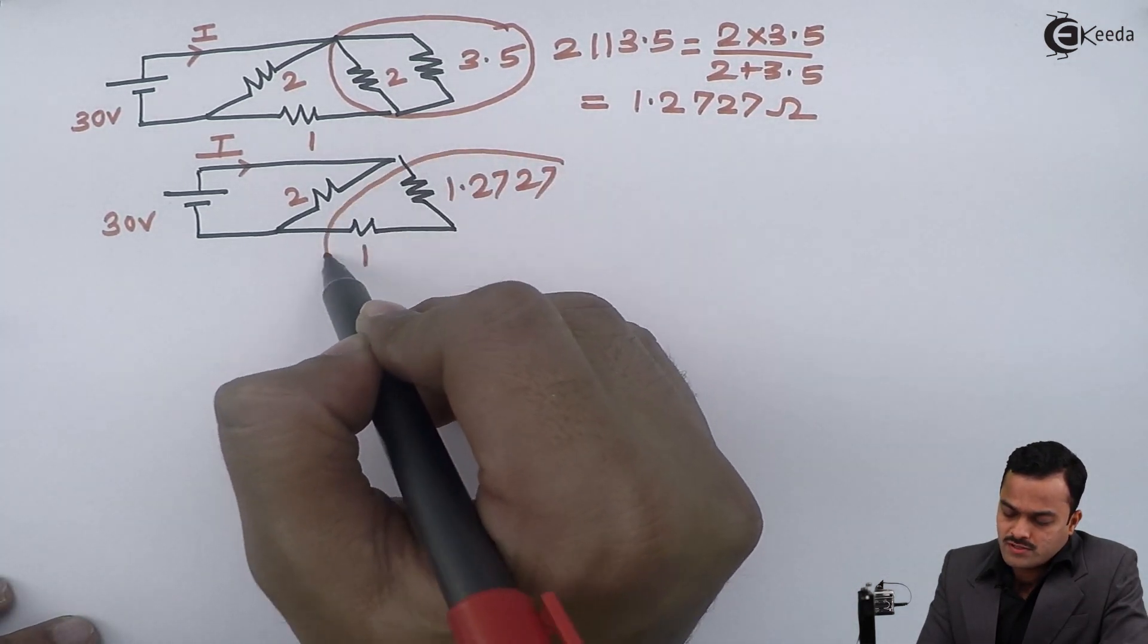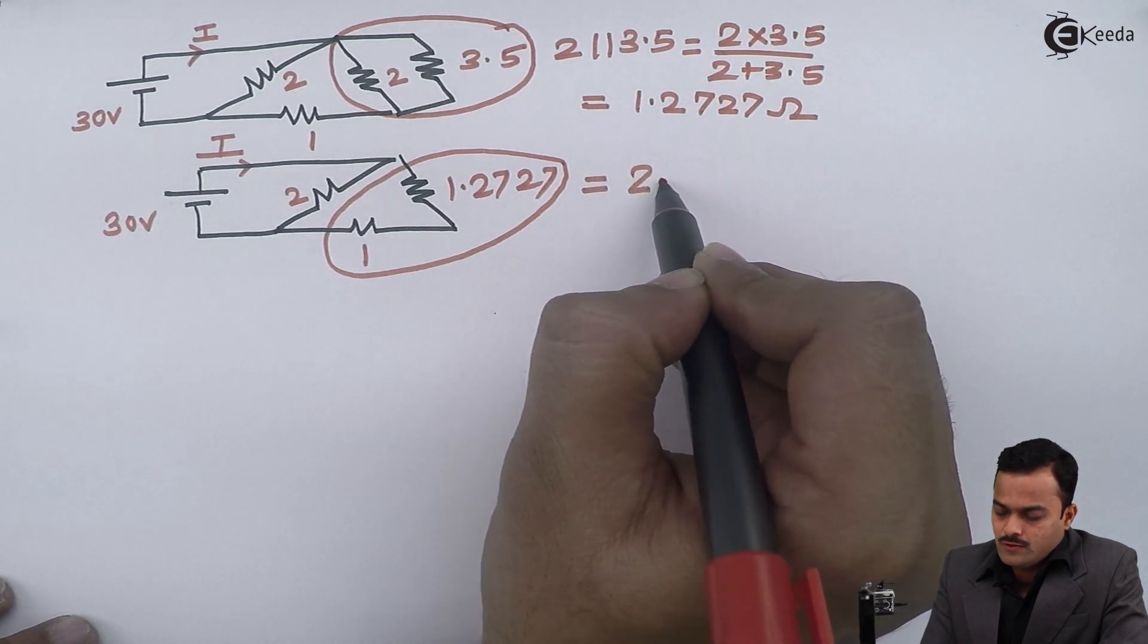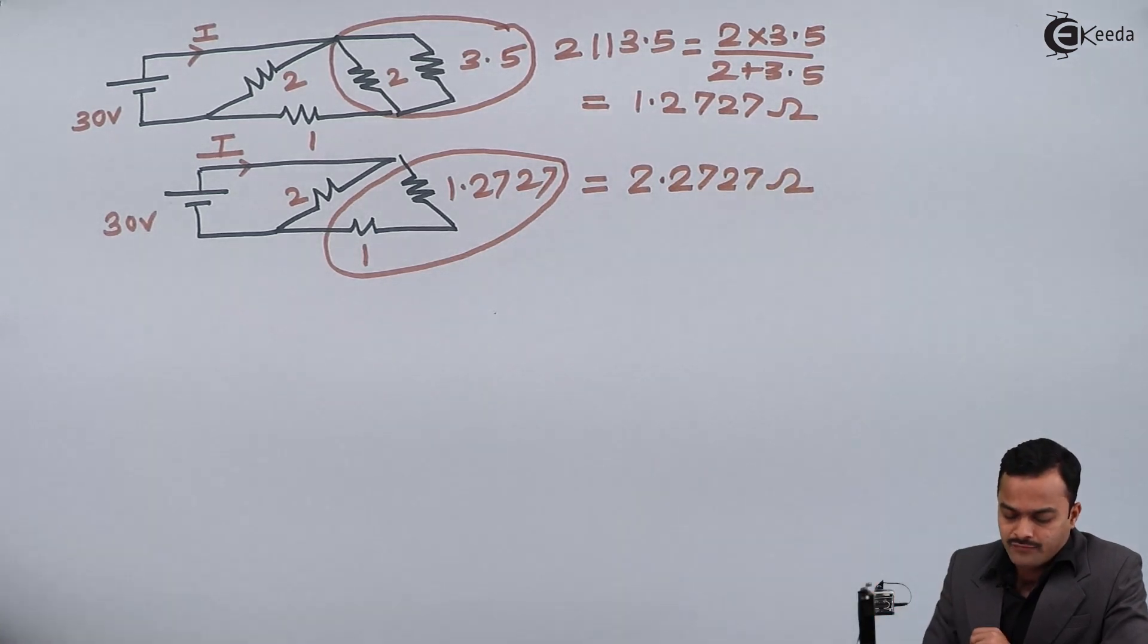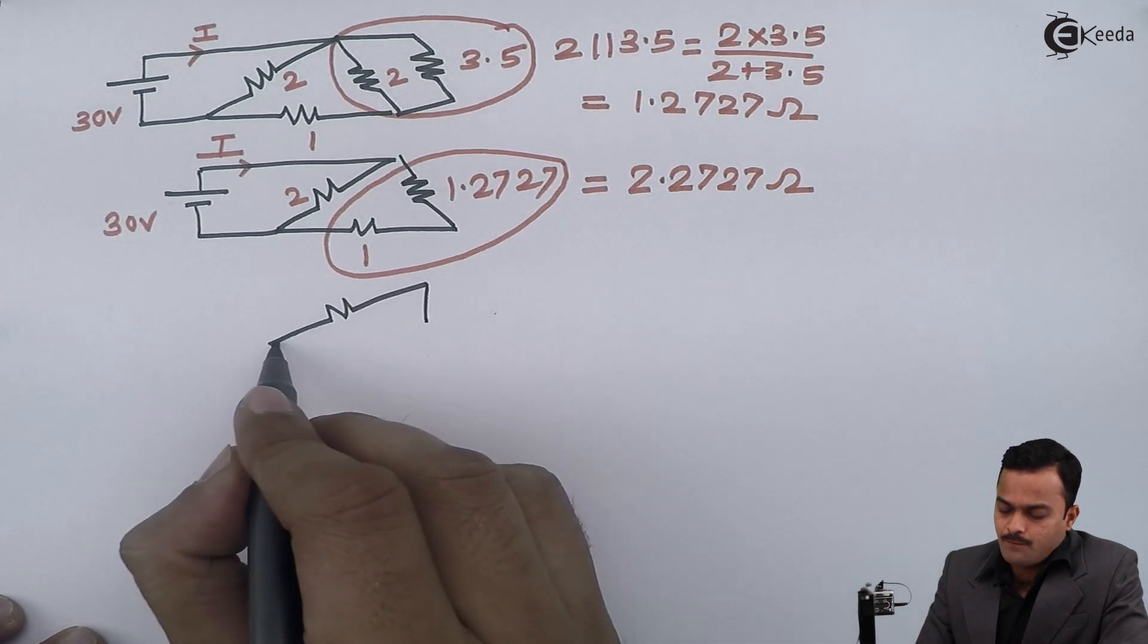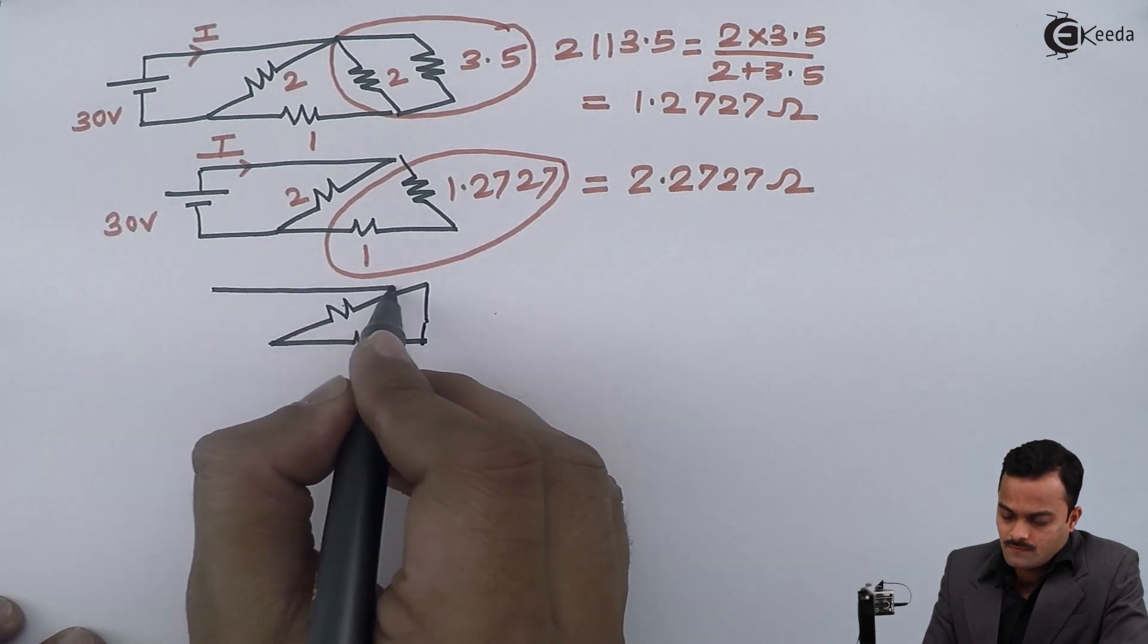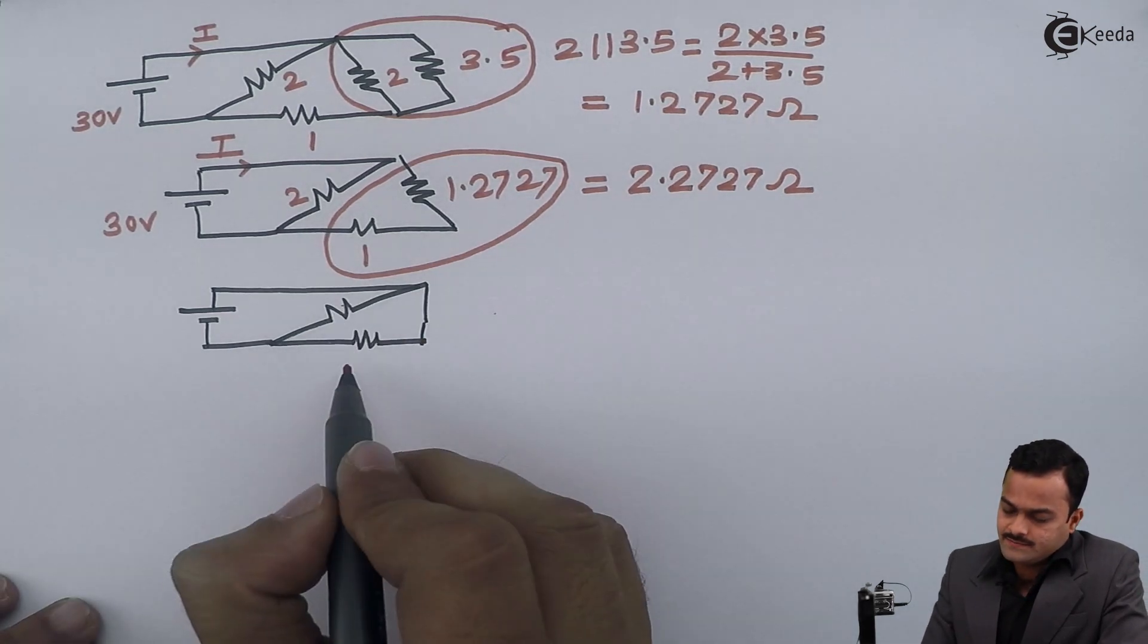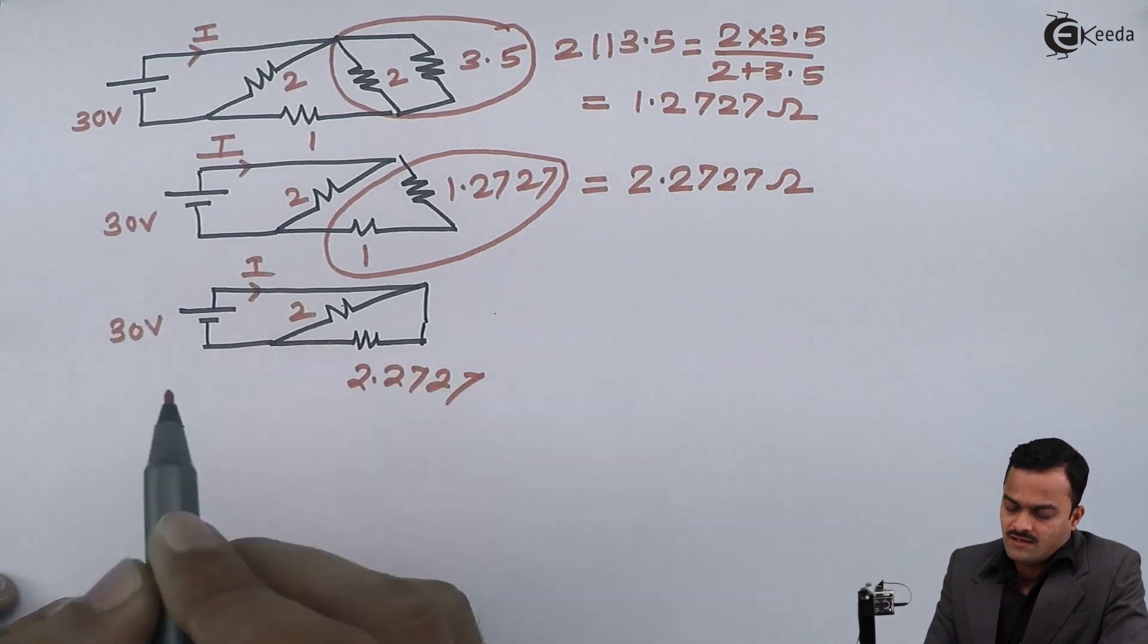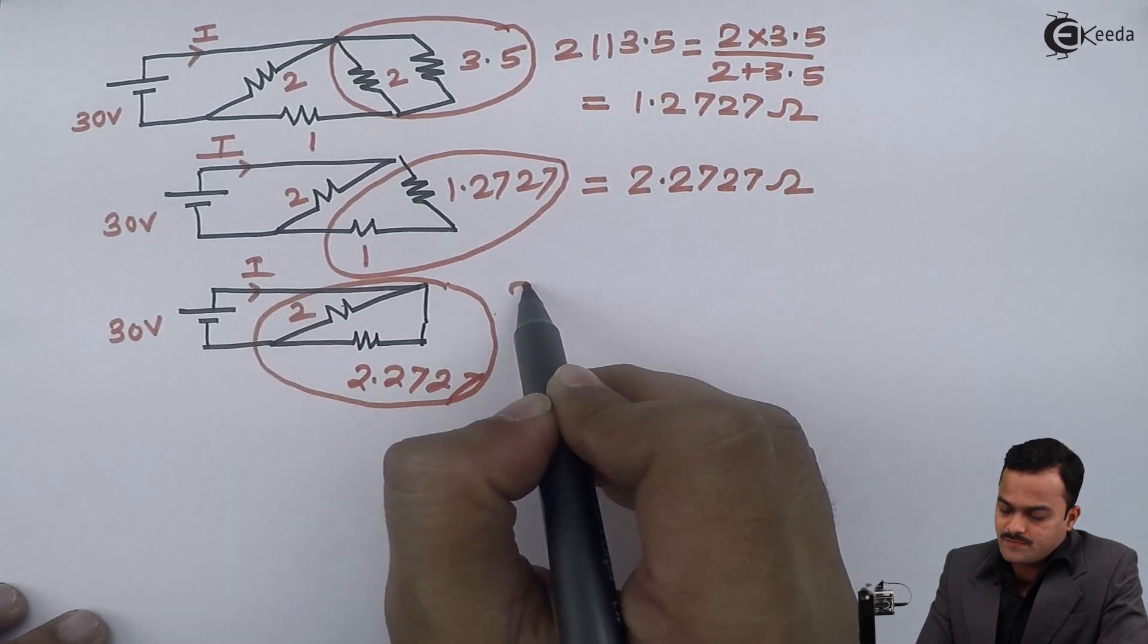This 1.2727 and this 1 is forming a series combination which will give you 2.2727 ohm. After redrawing the circuit, it will come in parallel with this 2 ohm.